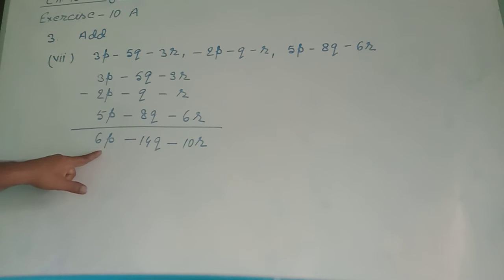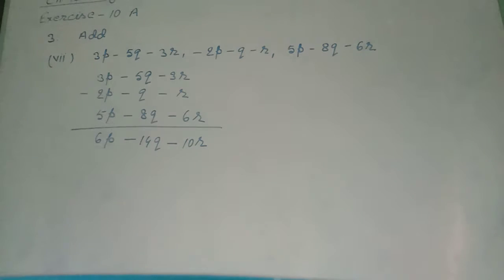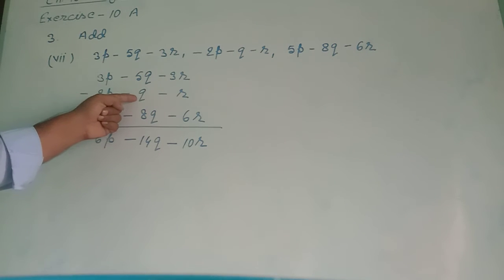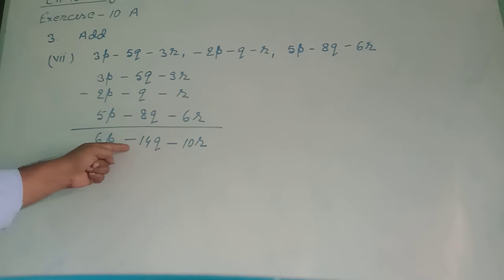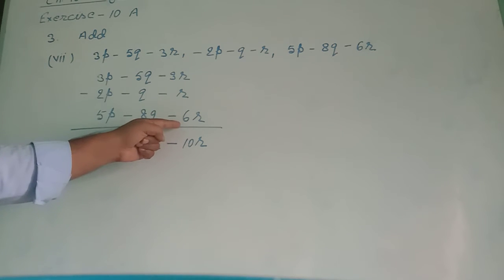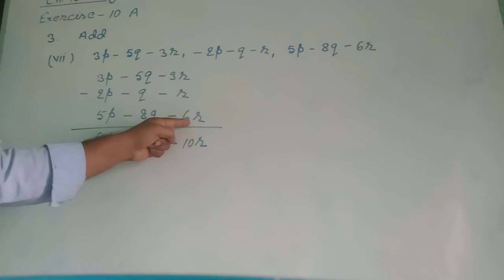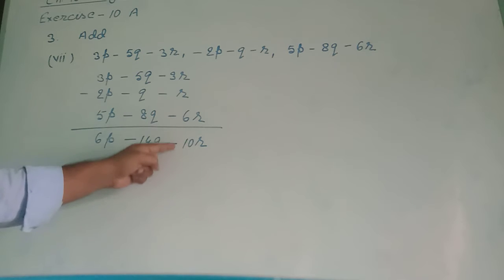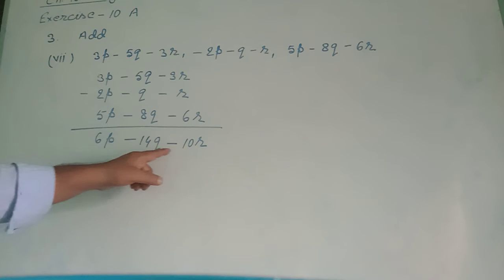For the q terms: all three terms have minus sign — minus 5q, minus q, minus 8q — so we add them: 5 plus 1 is 6, plus 8 is 14, giving minus 14q. For the r terms: similarly all minus — 3 plus 1 is 4, plus 6 is 10, giving minus 10r. The addition became 6p minus 14q minus 10r.